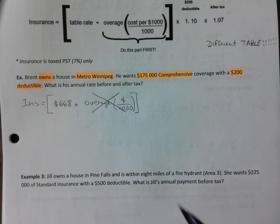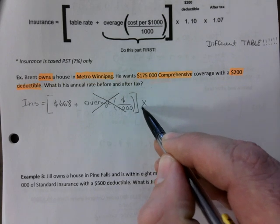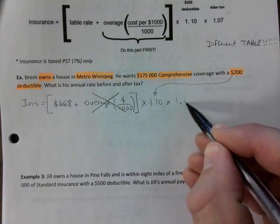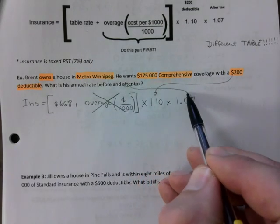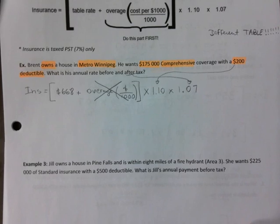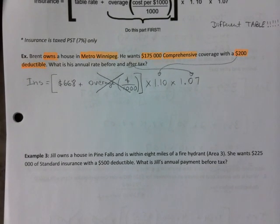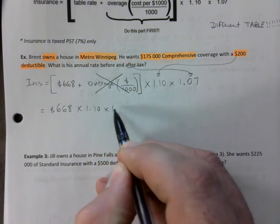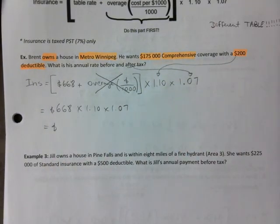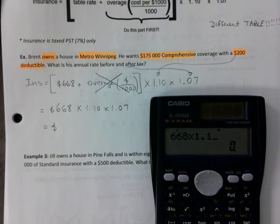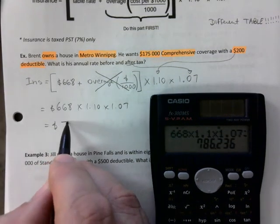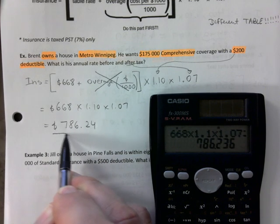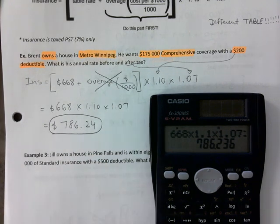Are we going to multiply by 1.1? Yes, because there's a $200 deductible. It also asks for after-tax, so: 668 × 1.10 × 1.07 = $786.24.